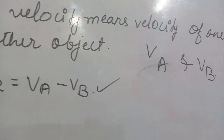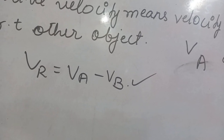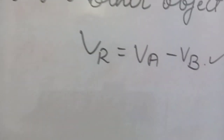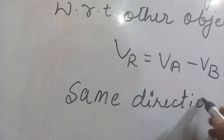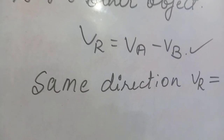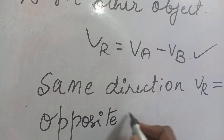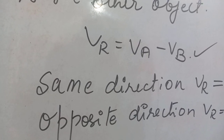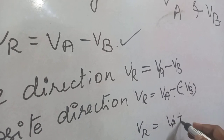For same direction, the relative velocity is VR equal to VA minus VB. If they are moving in the opposite direction, then VR equals VA minus (minus VB), and since minus into minus gives plus, VR equal to VA plus VB. This is the equation for relative velocity when the bodies move in the opposite direction.